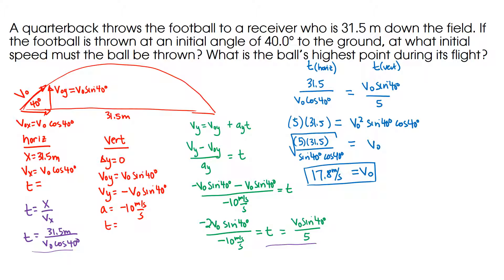Now, what is the ball's highest point during its flight? I can redo my vertical analysis. My delta-y is what I'm looking for. My V0y is V0 sine of 40 degrees, which is 17.8 meters per second times sine of 40 degrees.